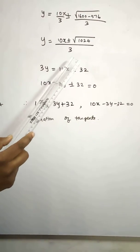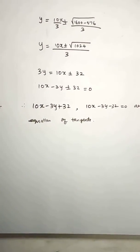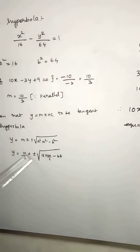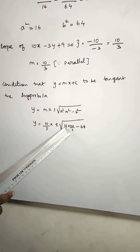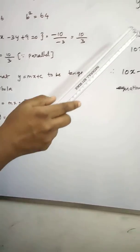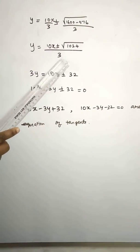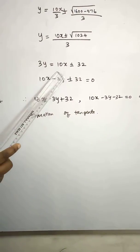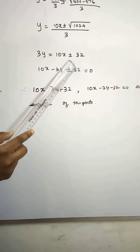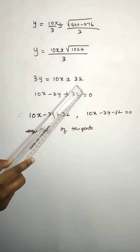So 3y cross multiply. y is equal to 10 by 3 x plus or minus root of 1024 by 9. Cross multiplying by 3: 3y is equal to 10x plus or minus 32.